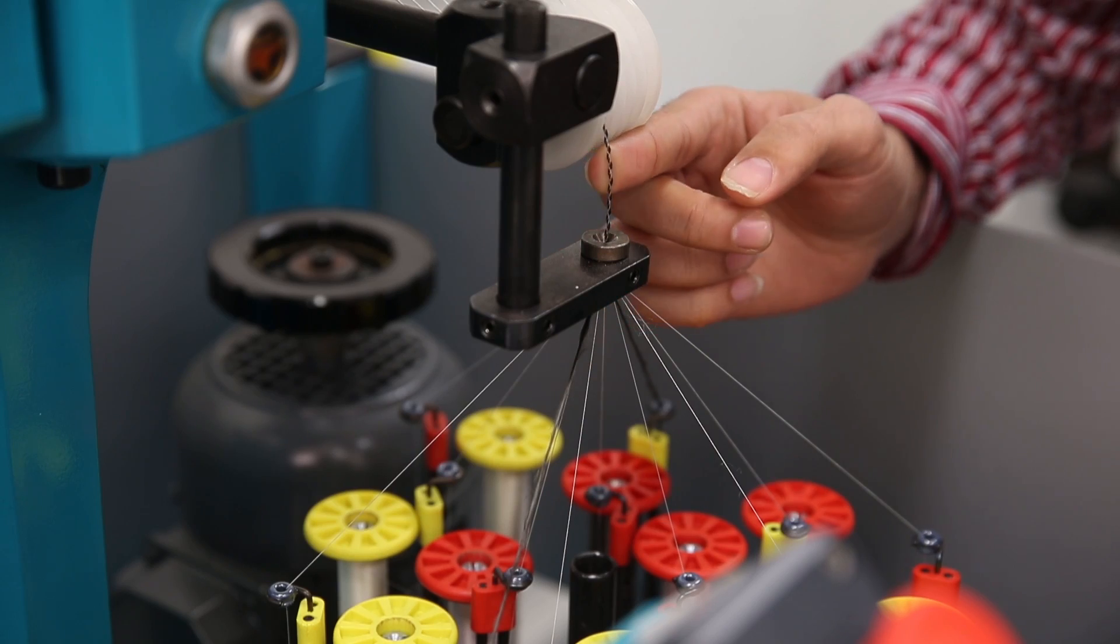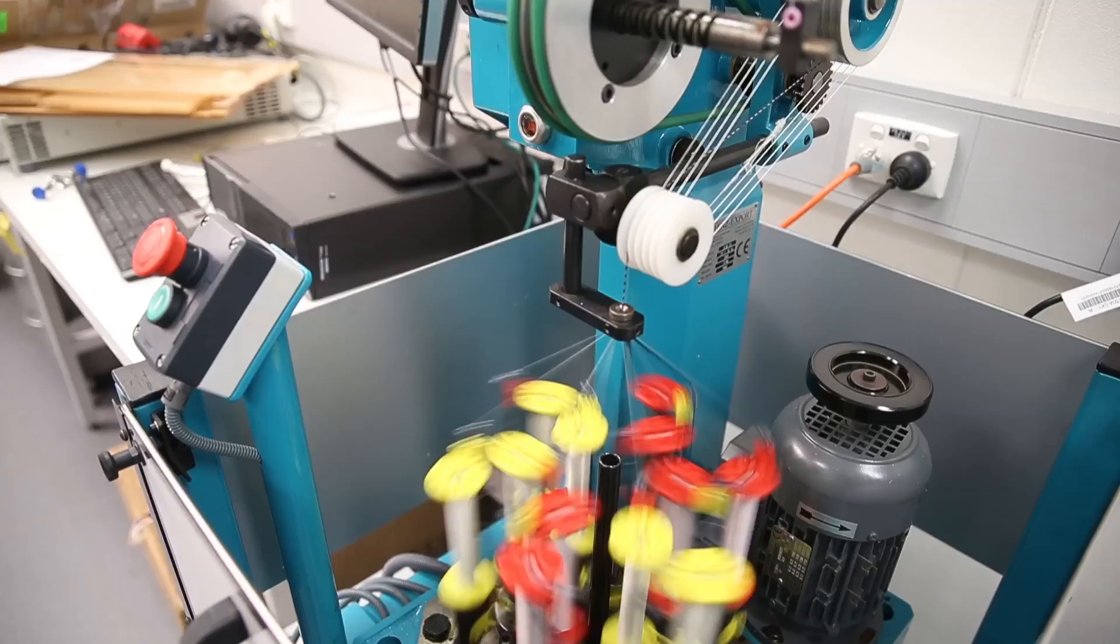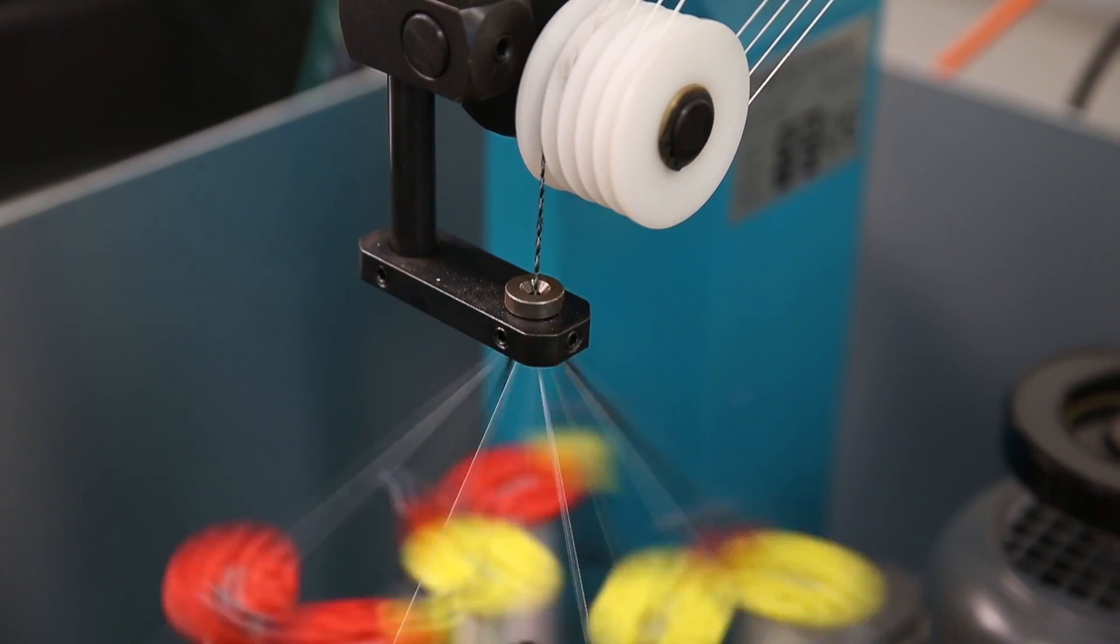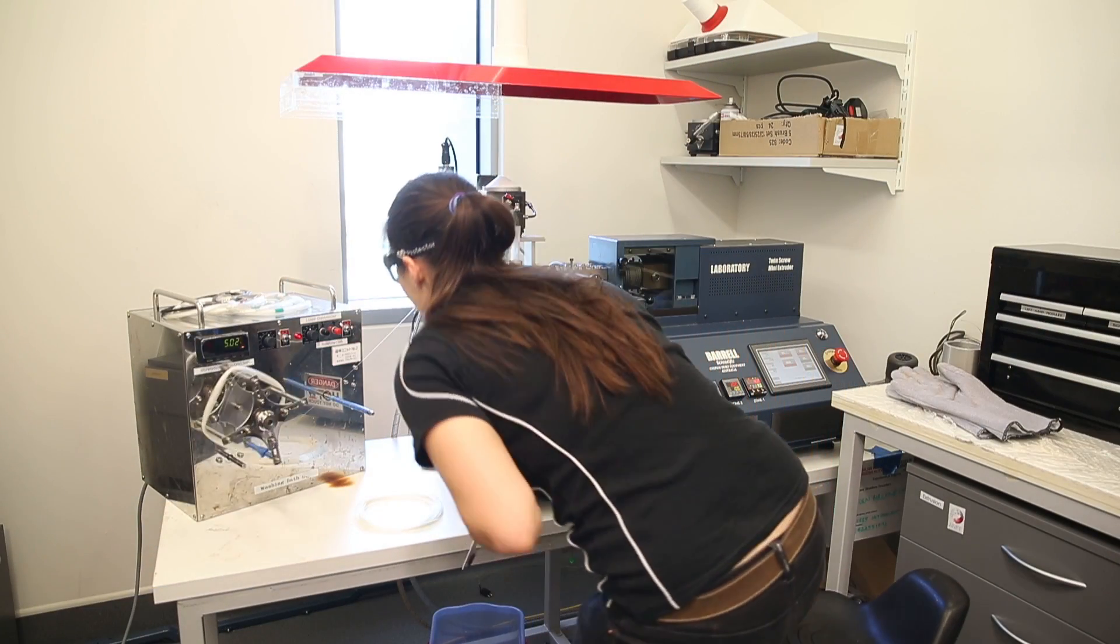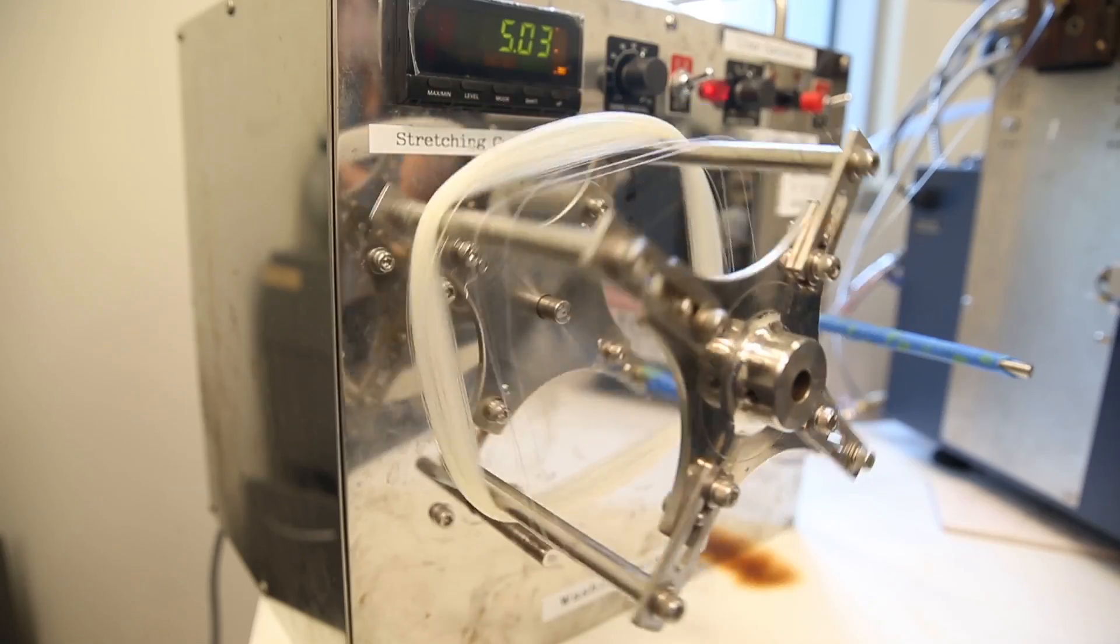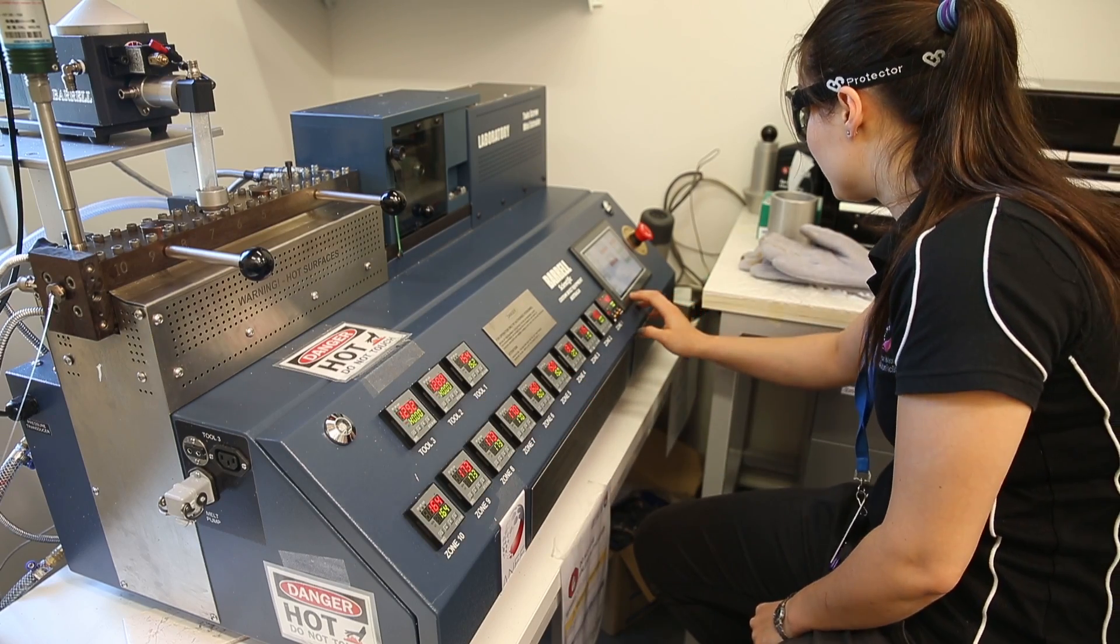One example recently involved the development of new fibres that are highly stretchable and conductive. We found that by using knitting approaches we can integrate those highly functional fibres into a wearable garment. That garment can be tuned in its sensitivity to human movement. It can be coupled with wireless electronics to transmit information about that human movement. Such information is critical in the areas of diagnostics, sports training and in rehabilitation.